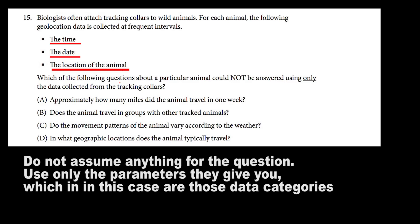A says: approximately how many miles did the animal travel in one week? Using simple logic, one week can be determined by the date, and how many miles can be determined by the location of the animal collected by the collars. So A can be fully answered with the data given — it's not our answer. B says: does the animal travel in groups with other tracked animals? The location of the animal will tell us where it is in relation to the other tracked animals, so this one can also be answered using just the third part of the data.